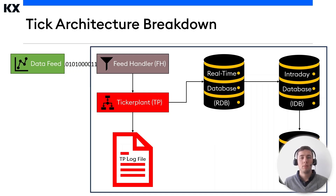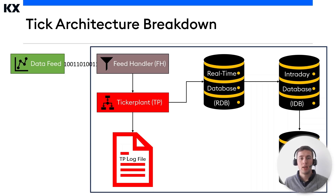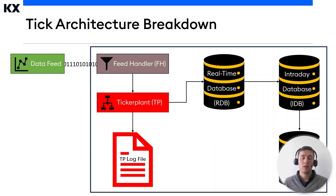The historical database consists of on-disk KDB Plus data, typically split into date partitions. While the RDB and the IDB store today's data, the HDB stores data from yesterday and before. Clients who wish to query records prior to today will query this process. Each date partition is mapped in memory so that the KDB Plus process knows where to read each partition from. This allows for fast and efficient queries across large data volumes. Data will only be loaded into memory on demand when the client queries the HDB tables. At the end of the day, the IDB is instructed to save its data on disk to the HDB in disk partition format.